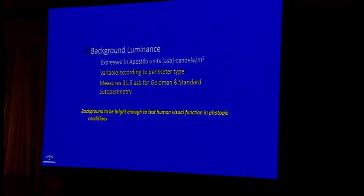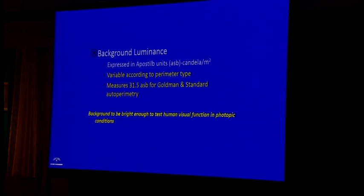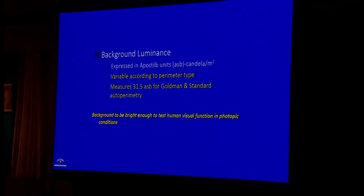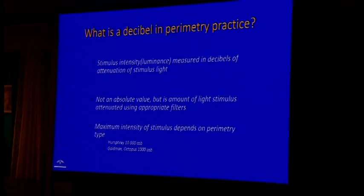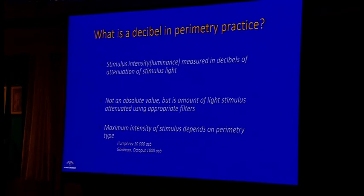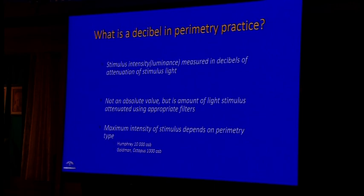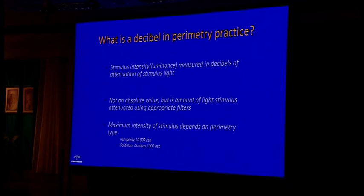We need to know some basic terminologies. An apostil is a universal unit for describing the luminance of an object. In perimetry, we use another unit of luminance called the decibel to describe the illumination of the projected stimulus. Decibels measure the luminance of the stimulus or background and are a logarithmic unit, while apostils represent the observer unit.